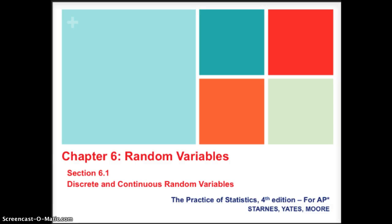Hi ladies and gentlemen, this is Ms. Skokin. We're back in AP Statistics and we're taking a look at Chapter 6, Random Variables. In Section 6.1 we're going to be looking at both discrete and continuous random variables.